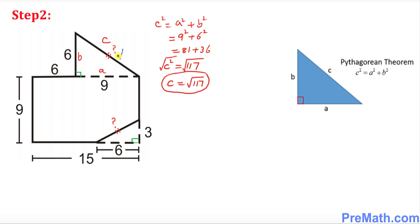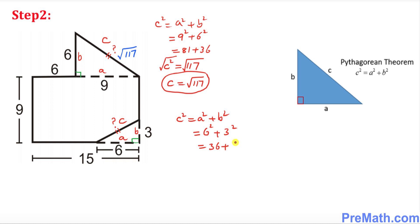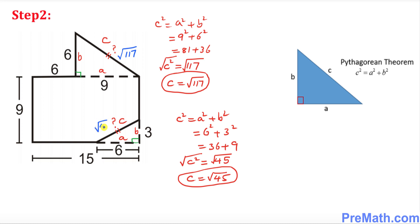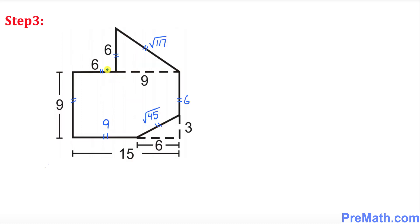Likewise, we're going to find the unknown side in the second right triangle using the Pythagorean theorem. Let's call this side a, this side b, and this unknown side c. Applying the theorem again: c² = a² + b², so 6² + 3² = 36 + 9 = 45. Taking the square root, c = √45.